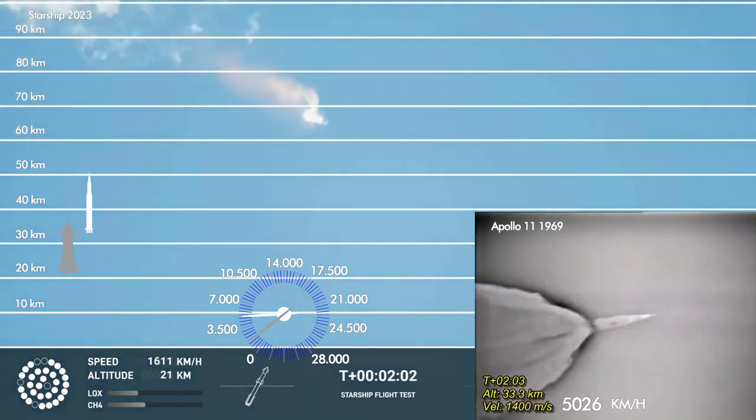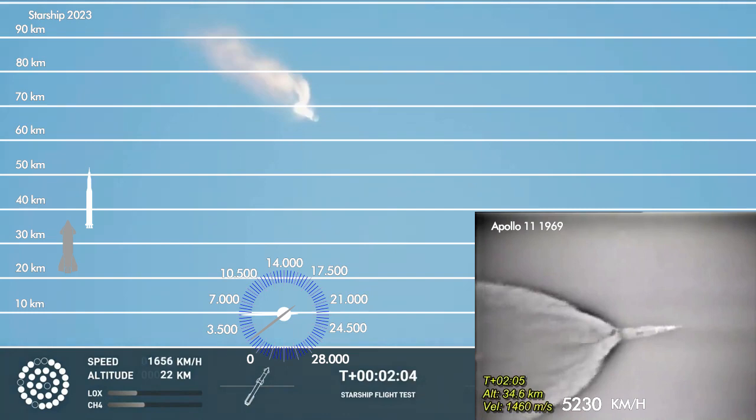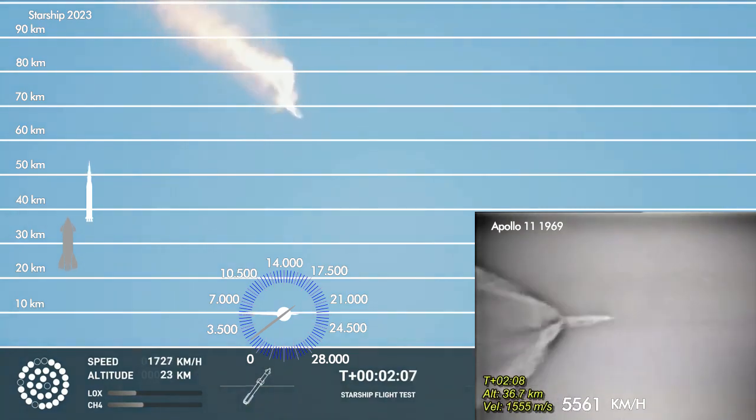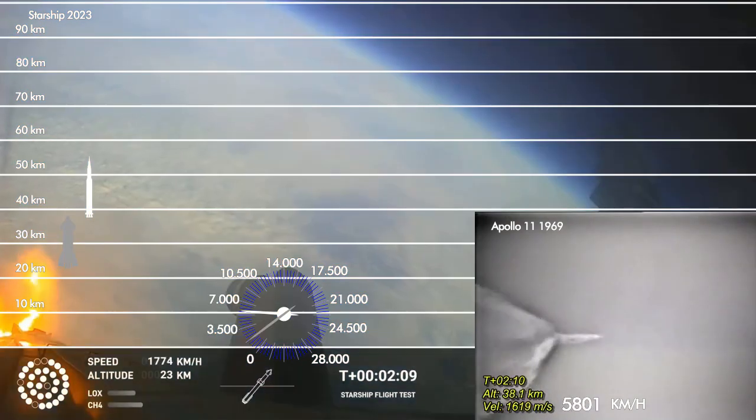When Starship separates, we light up six engines in a staggered sequence. If all goes well, those six engines will burn for almost six and a half minutes.